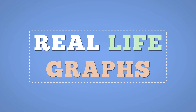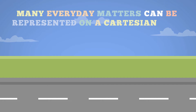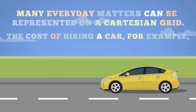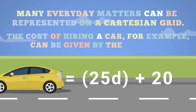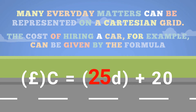Real-life graphs. Many everyday matters can be represented on a Cartesian grid. The cost of hiring a car, for example, can be given by the formula C equals 25D plus 20, where C is the total cost in pounds, 25 is the cost per day, D is the number of days the car will be rented for, and 20 is a fixed standing charge.